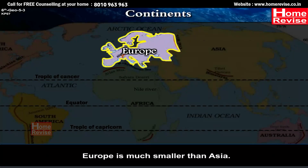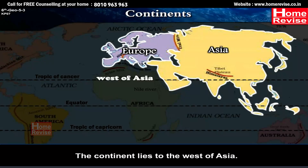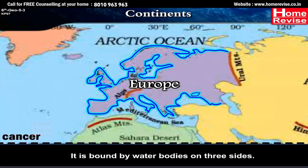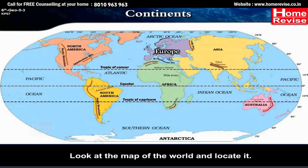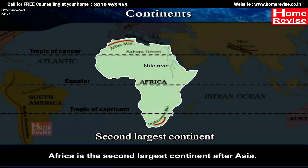Europe is much smaller than Asia. The continent lies to the west of Asia. The Arctic Circle passes through it. It is bound by water bodies on three sides.